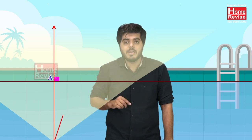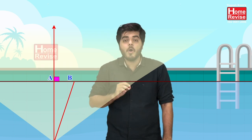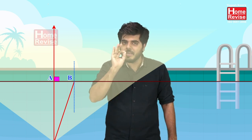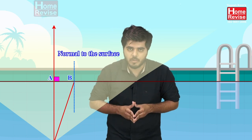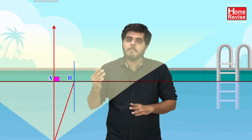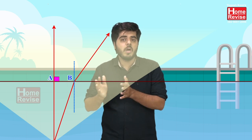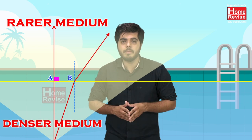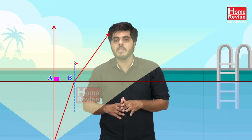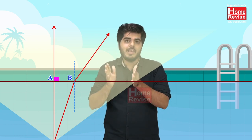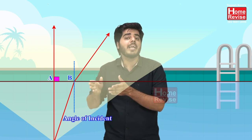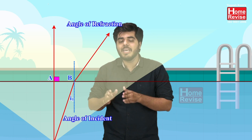The second ray comes in a diverging manner and strikes the surface at point B. We first draw a line perpendicular to the surface — the normal. Whenever a ray of light travels from denser medium to rarer medium, the ray bends away from the normal. So the angle of incidence is i1 and the angle of refraction is r1.